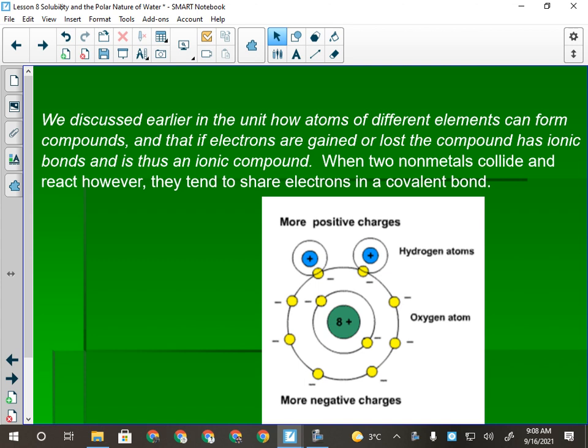We discussed earlier in the unit how atoms of different elements can form compounds, and if electrons are gained or lost, the compound has an ionic bond and is an ionic compound. When two nonmetals collide and react, they tend to share electrons in a covalent bond. There are different types of covalent bonds: nonpolar or polar. In a nonpolar covalent bond, the electrons are shared fairly equally.